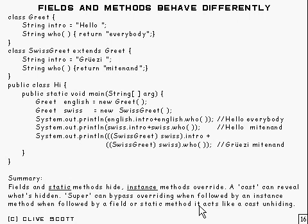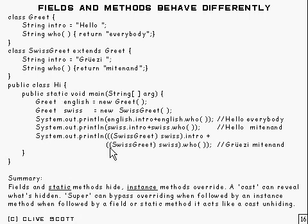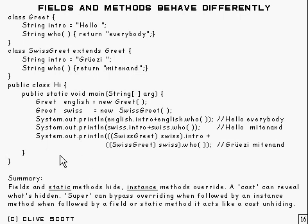'super' can bypass overriding when followed by an instance method, and when followed by a field or static method it acts like a cast. I can't use super in that context, because for a start it's a static method and you can't use super in a static context. Also, super will only bypass your own overriding — it won't bypass overriding occurring in a different class. So no use of super there would help.